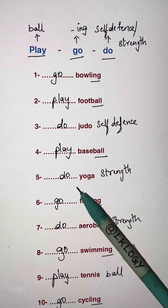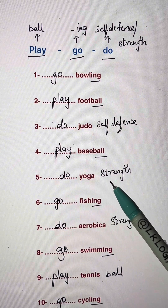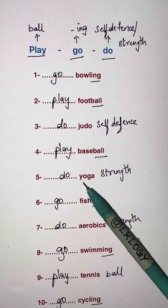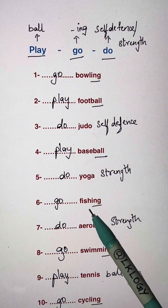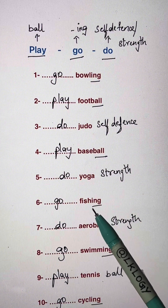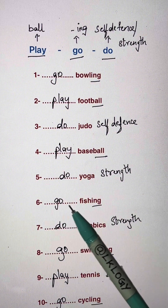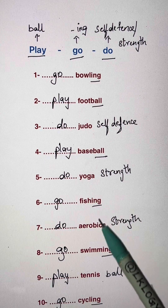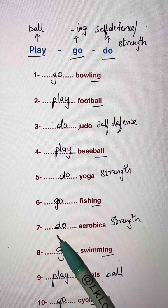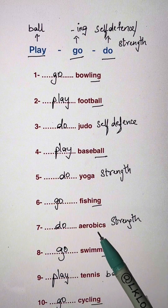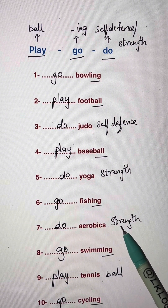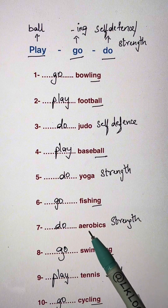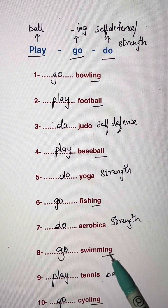Blank yoga — it's a strength sport, so do yoga. Blank fishing — it has -ing and you can do it alone or with a partner: go fishing. Blank aerobics — it's used for strength: do aerobics.